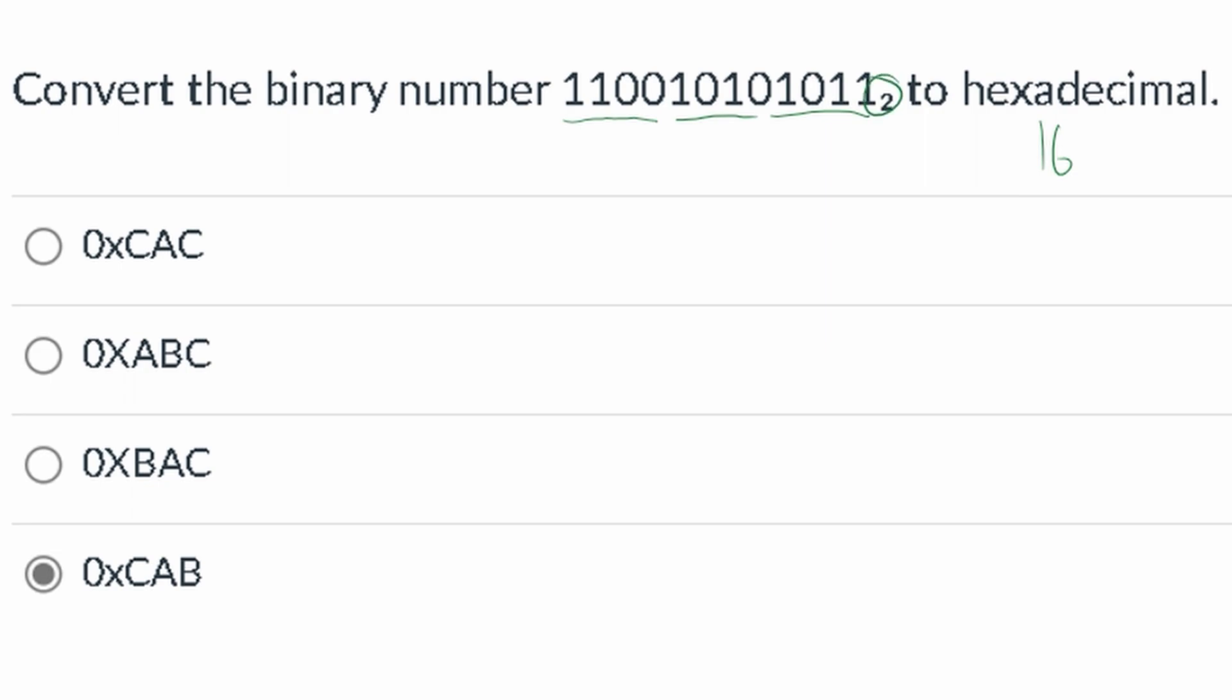With binary, we have base 2, which is what this base 2 is right here. So when we look at this, we're going to look at them in parts.